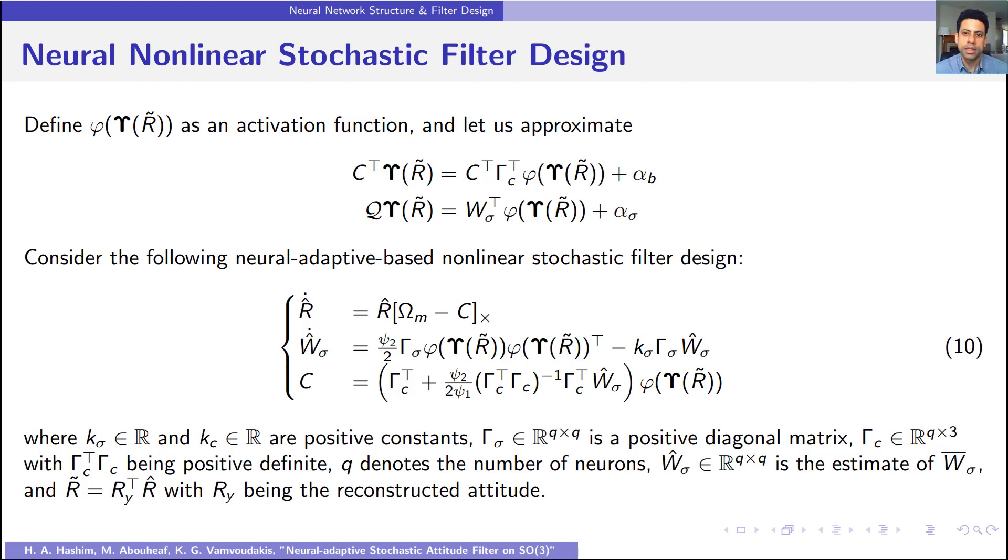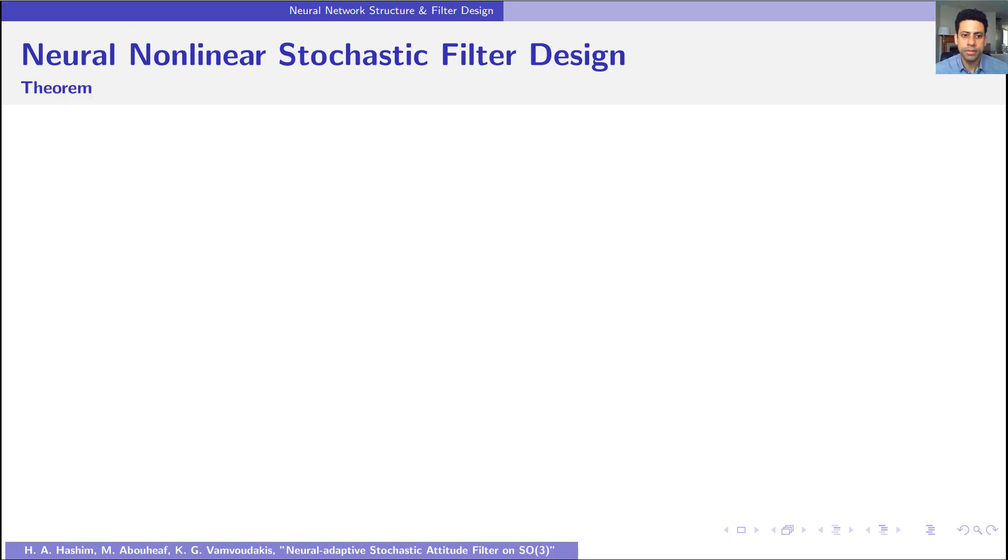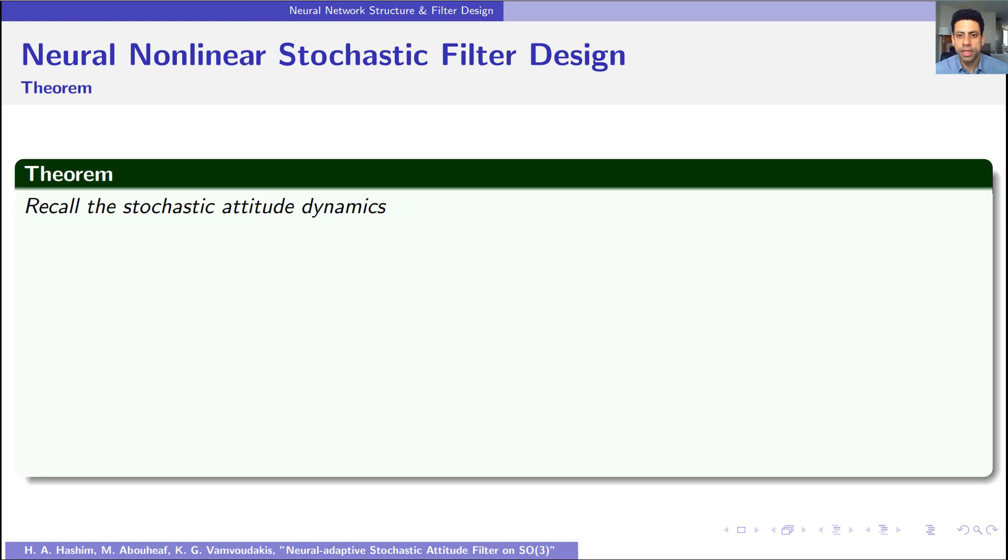Let us now move to our paper results. Recall the stochastic attitude dynamics: DR equal R multiplied by skew symmetric of omega M DT minus R multiplied by skew symmetric of Q D beta.